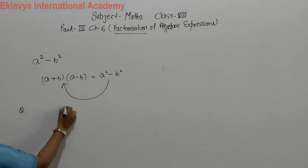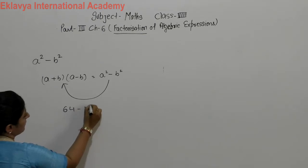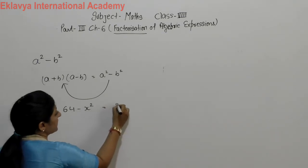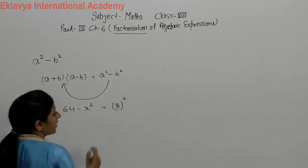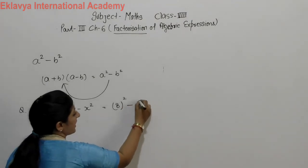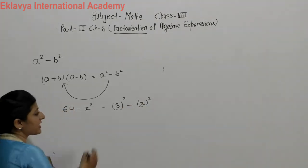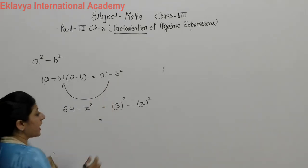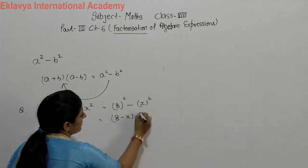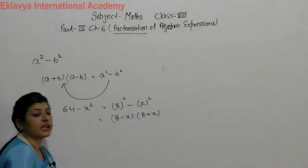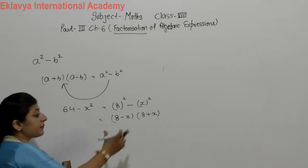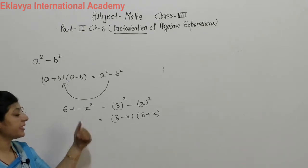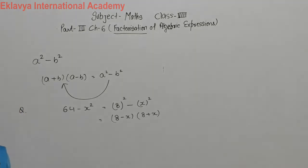For example, 64 minus x². Firstly we check that 64 is the whole square of 8, and x² is the whole square of x. Then it becomes the form of A² - B², giving factors (8 - x) and (8 + x). These are the two factors of the given algebraic expression 64 minus x².